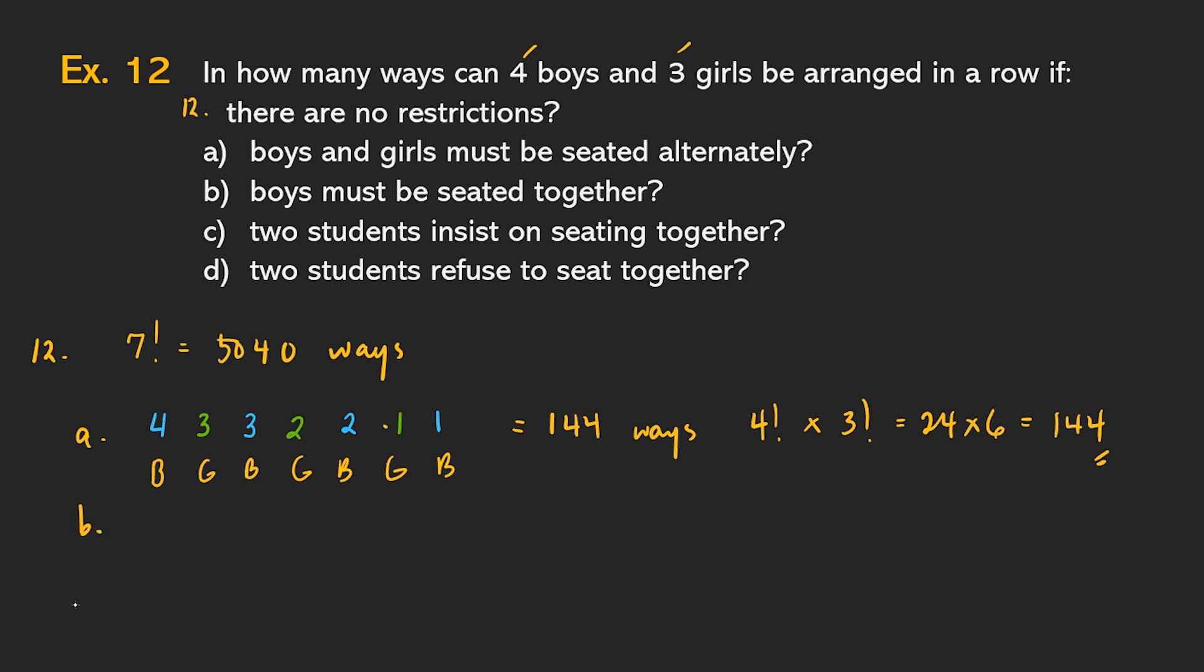So there are 144 ways to arrange the boys and girls if they want to be seated alternately. And for letter B, boys wanted to be seated together. So ibig sabihin, boys, boys, boys, boys. Igugroup natin sila as one. And then, we have the girl, the girl, and the girl. That pala may mga code to. G1, G2, at G3, to denote na magkakaiba sila. As well as B1, B2, B3.